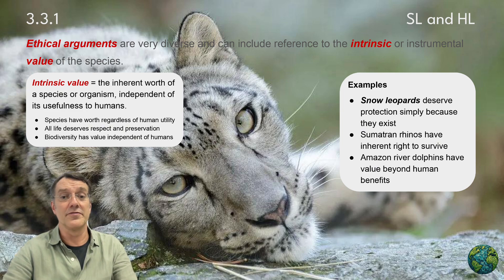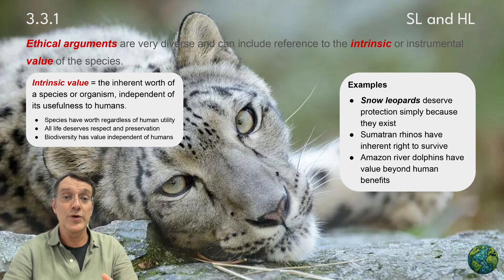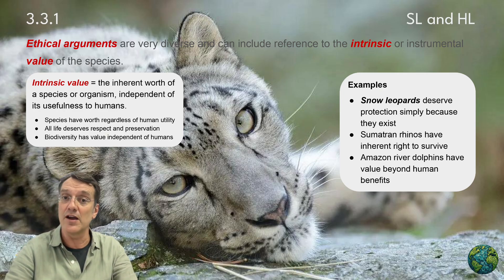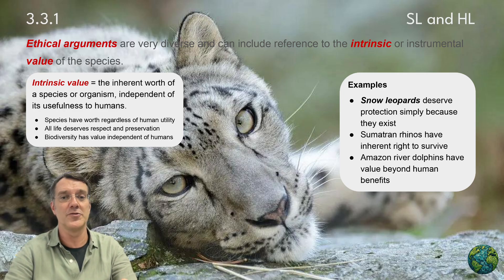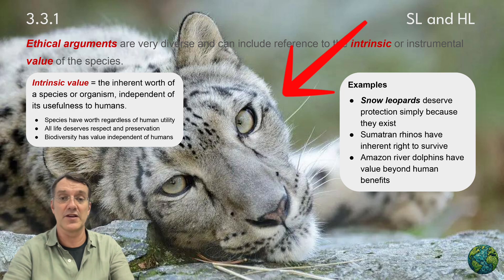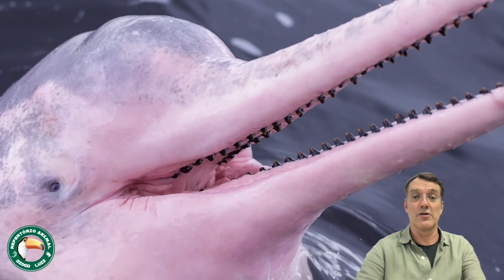Ethical arguments for conservation are diverse and can include reference to the intrinsic or instrumental value of species. Intrinsic value refers to the inherent worth of a species, independent of its usefulness to humans. This perspective holds that species have worth regardless of human utility — all life deserves respect and preservation, and biodiversity has value independent of human benefits. Examples include snow leopards deserving protection simply because they exist, Sumatran rhinos having an inherent right to survive, and Amazon river dolphins having value beyond any human benefit they provide.